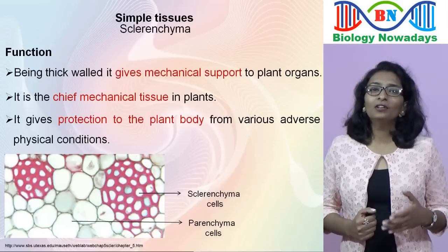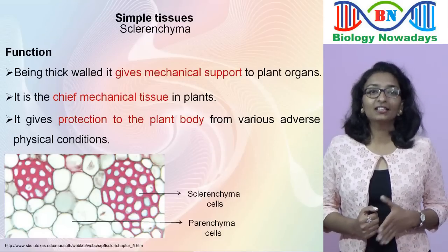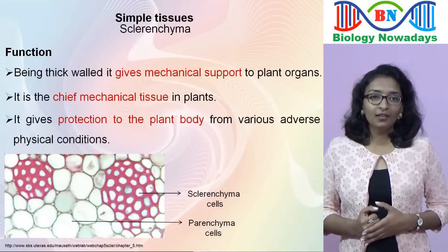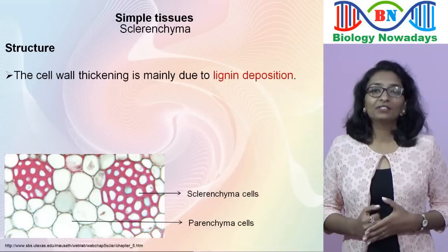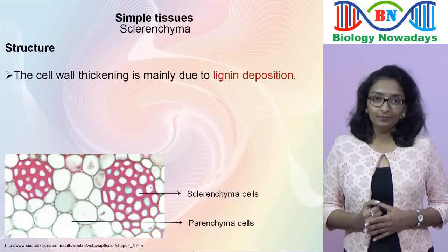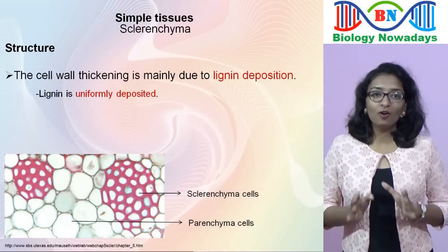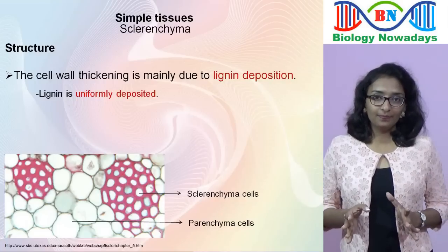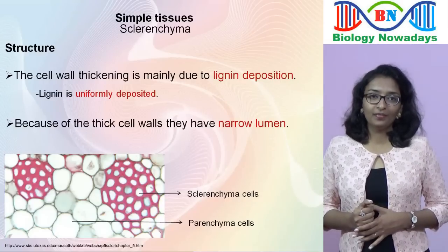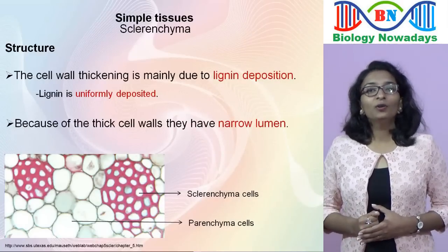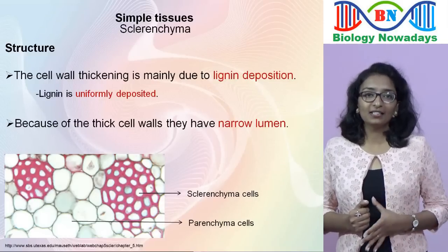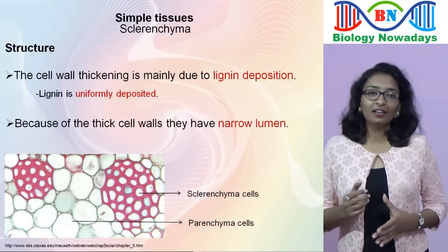You may remember that cell wall thickening at the corners of colenchyma is due to deposition of cellulose, hemicellulose and pectins. But the cell wall thickening of sclerenchyma cells is mainly due to the deposition of lignin, which is uniformly deposited all over the sclerenchyma cell walls. Because of the thick cell walls, sclerenchyma cells have a narrow lumen — the size of the lumen or cell cavity of sclerenchyma cells is much smaller than that of parenchyma cells.